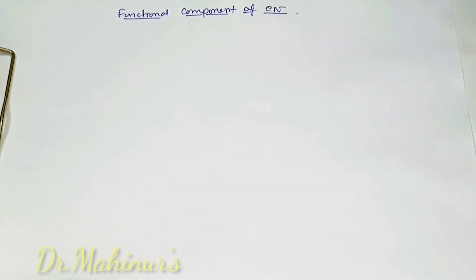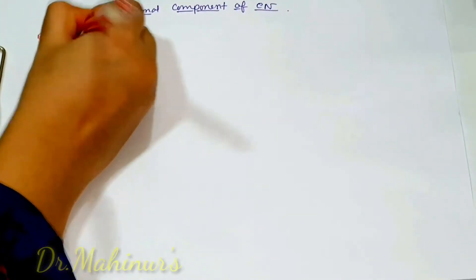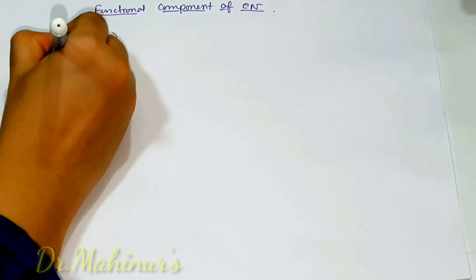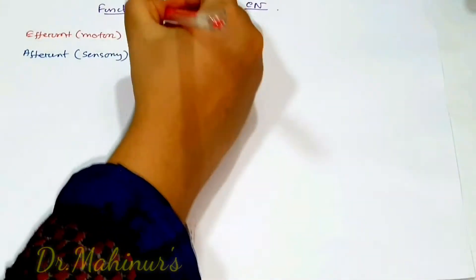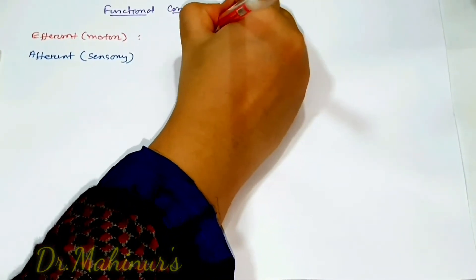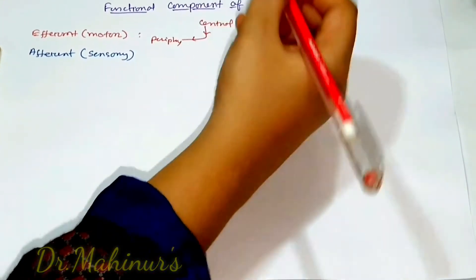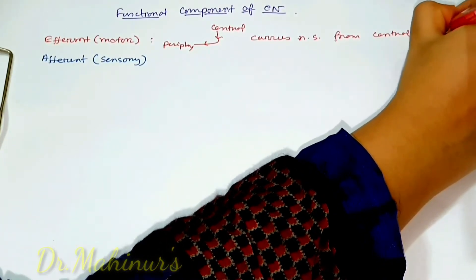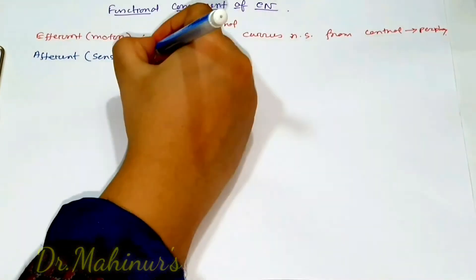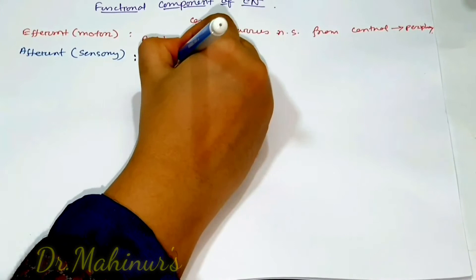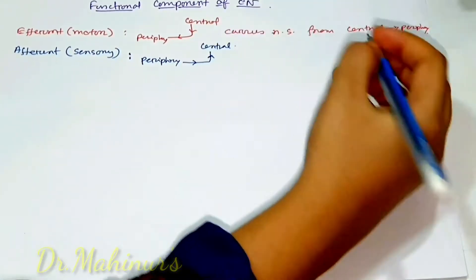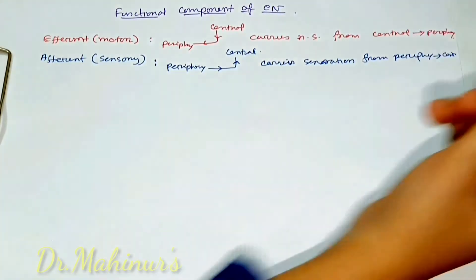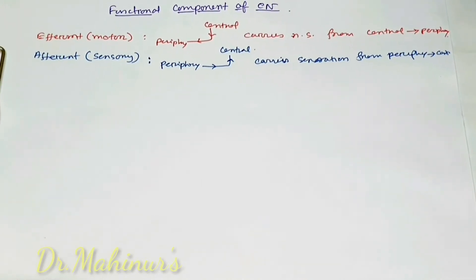Before understanding the functional components, we need to know six terms and be very clear about them. First: efferent or motor, and afferent or sensory. Efferent means when a nerve fiber carries nerve supply from central to periphery — it is efferent or motor. Afferent means when it carries sensation from periphery to central — it is afferent or sensory.